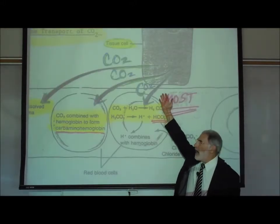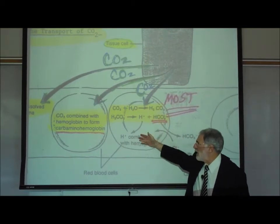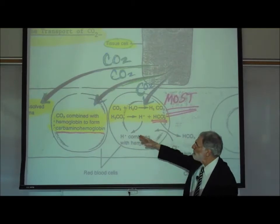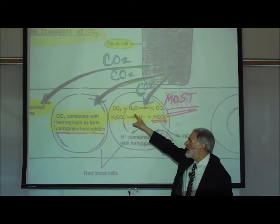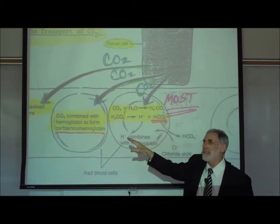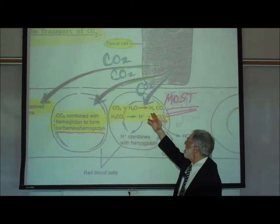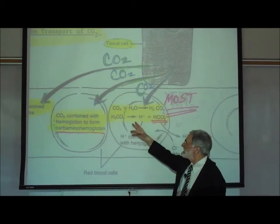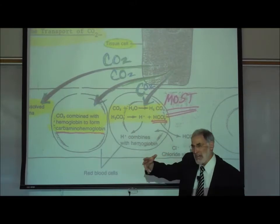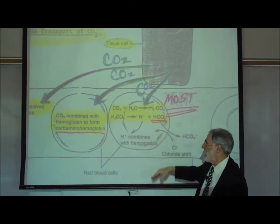The majority of carbon dioxide that enters the bloodstream undergoes a chemical reaction. Most of the carbon dioxide will react with water to form H₂CO₃, carbonic acid. Like most good acids, that carbonic acid then proceeds to dissociate — to break apart — forming a hydrogen ion and a bicarbonate ion.